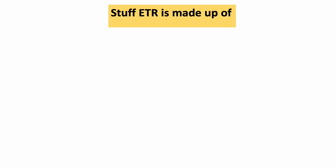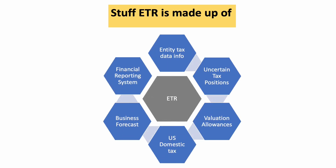Moving on to the key components of ETR — the data that ETR is made up of. If you are starting your career as a tax accountant, you will hear a key term known as a tax package or tax info data used in your company. This is essentially a tax report, generally an Excel file, which is distributed by the tax department to each of their group companies to collect information from all entities that are part of your US consolidation group.